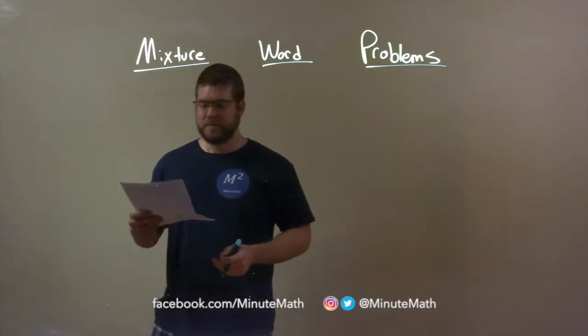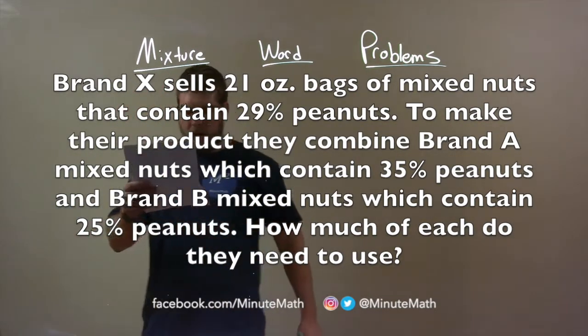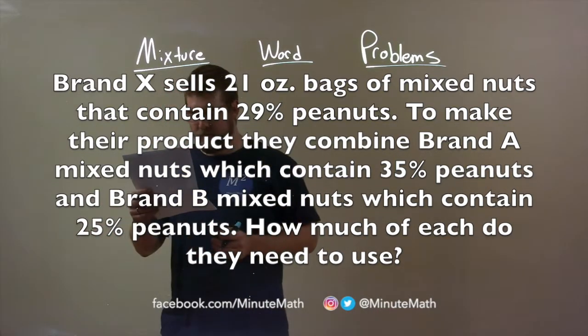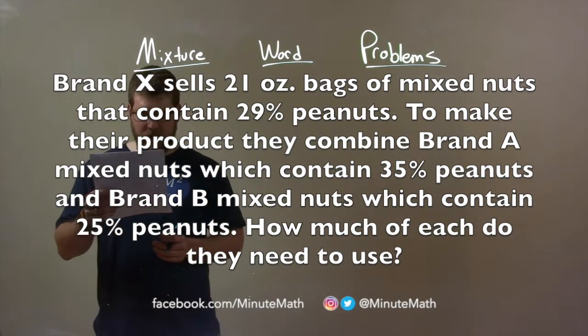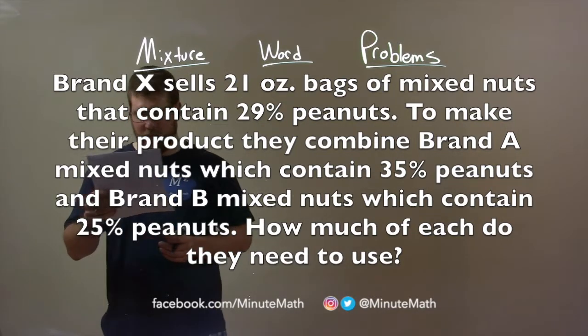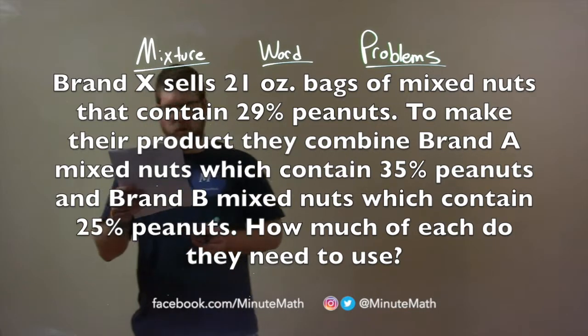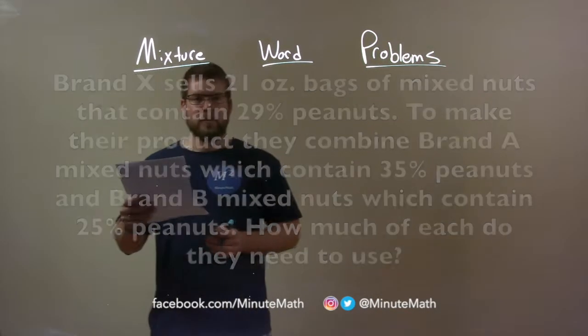If I was given this problem: Brand X sells 21 ounce bags of mixed nuts that contain 29% peanuts. To make their product, they combine Brand A mixed nuts, which contain 35% peanuts, and Brand B mixed nuts, which contain 25% peanuts. How much of each do they need to use?